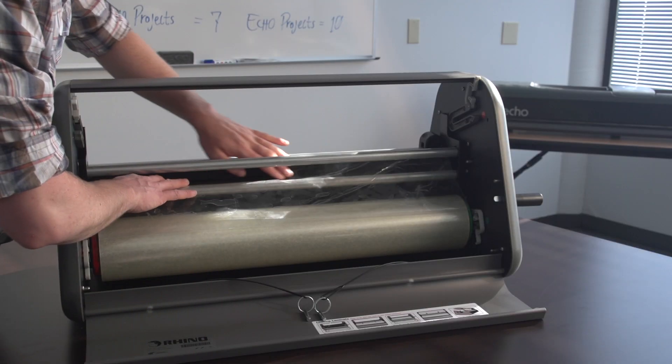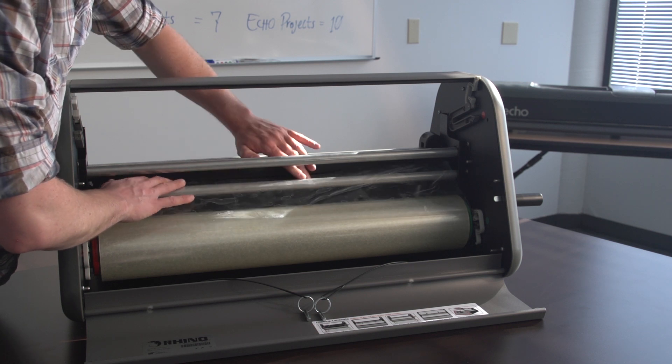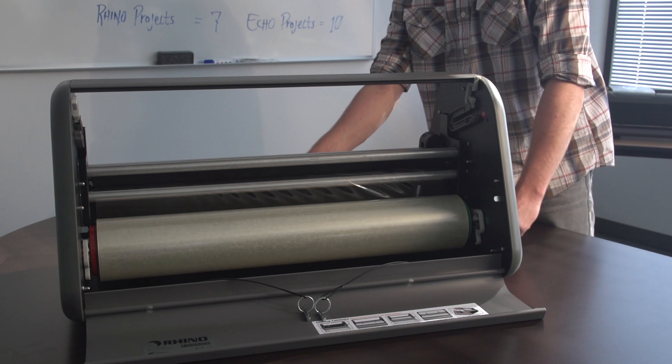Then unroll a few inches of laminate film and feed it in between the metal rollers in order to reach the rubber rollers. Turn the crank clockwise to rotate these rubber rollers just enough to grab the laminate film.